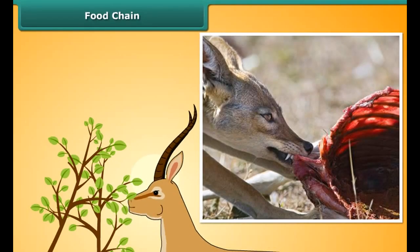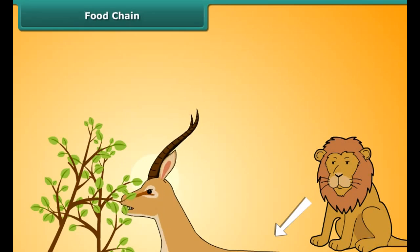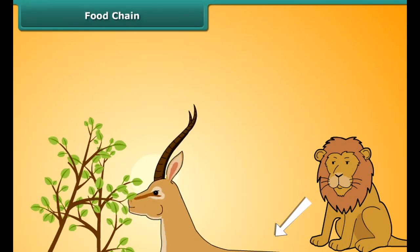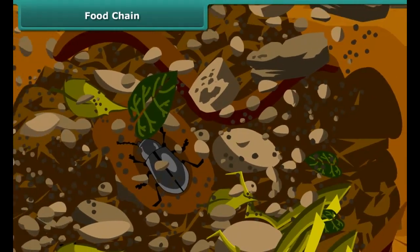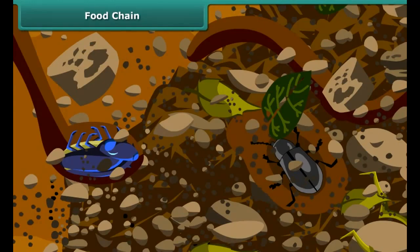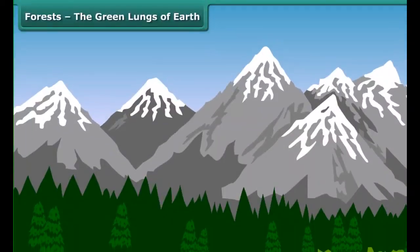Animals can be plant-eating herbivores or flesh-eating carnivores, and can also be omnivores, consuming both plants and other animals. Scavengers feed on dead animals. For example: plants use sunlight and prepare food; plants are eaten by deer; deer are eaten by lions. When lions die, their remains are eaten by scavengers such as vultures and hyenas. Decomposers such as fungi and bacteria feed on the remnants of dead organisms and break them down into humus, which provides nutrients to plants. Thus the food chain comes full cycle.